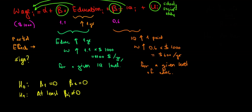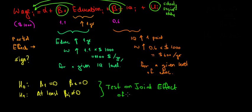If at least one of them is different from zero, it means we have at least one variable affecting our wage. Taking education and IQ together jointly in the model, there will be a significant effect on wage. This is a test on the joint significance — a test on the joint effect of education and IQ on wage.